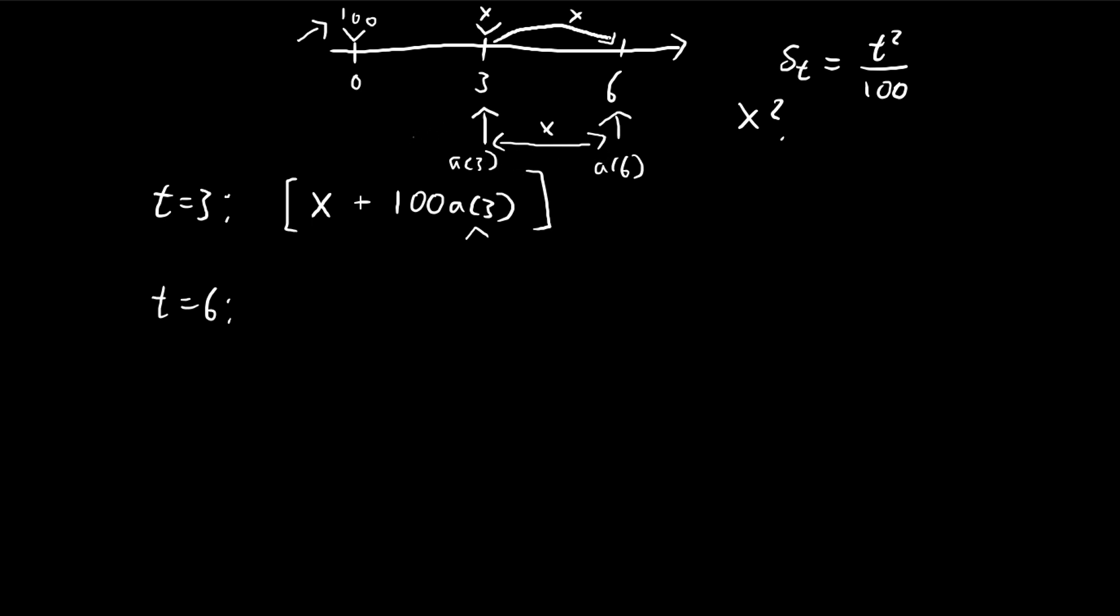Similarly, if we have $1 at time 3, we would have a6 over a3 dollars at time 6. It's just a matter of ratio. So at time 6, how much money would you have? By the same reasoning, we would have this multiplied by a6 over a3 dollars.